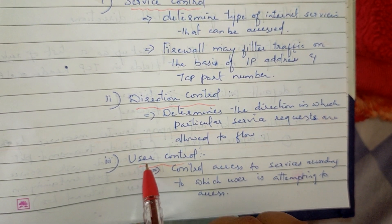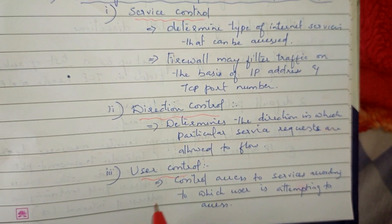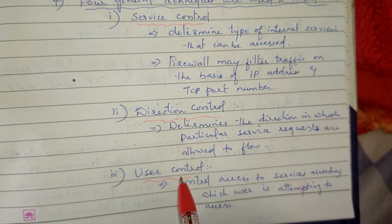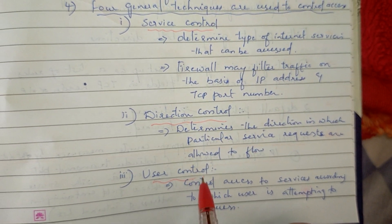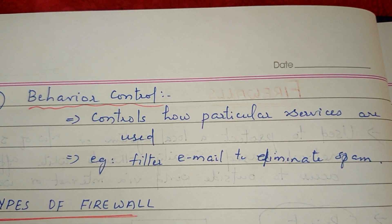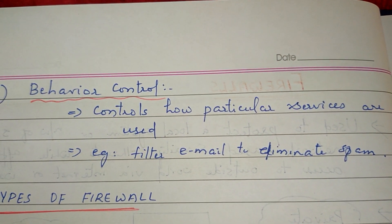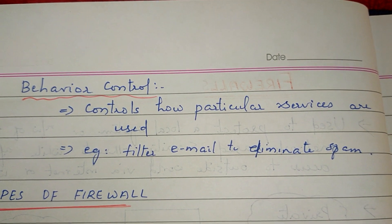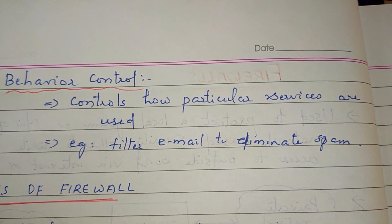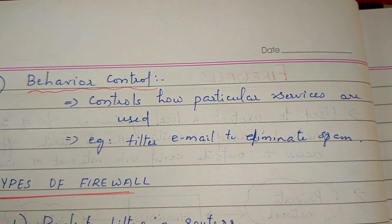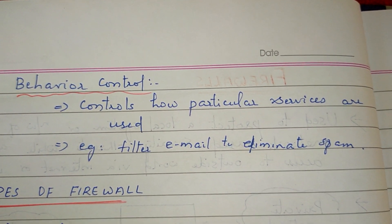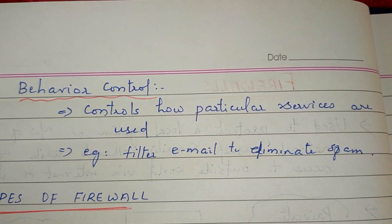Then, User Control. These services should be able to be accessed by any user — that is user control. Last one is Behavior Control. How do you use these services? We have to eliminate spam filters. How do you use these services? In any direction, you can see behavior control. So there are four types of control access.